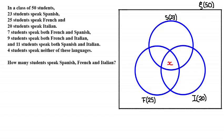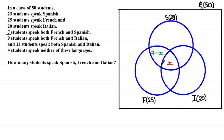We're told that 7 students speak both French and Spanish, represented by the shaded region here. The total in that shaded region must equal 7, so the outer part of that intersection (excluding the centre) is 7 minus X, since 7 minus X plus X equals 7.